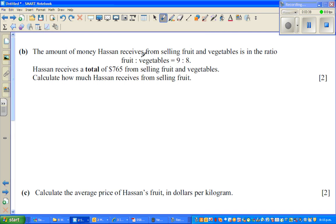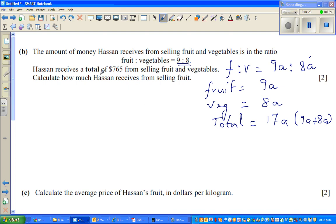So the amount of money Hassan receives from selling fruit and vegetables is in the ratio of 9 is to 8. So again, let me write F to V is 9A is to 8A. So that means if he in fruit, if he got 9A dollars, in vegetables he got 8A dollars. So total, he got how many dollars? I can say 9A plus 8A, which is 17A. Now why did I add? Because it says here, Hassan receives a total of 765 from selling fruits and vegetables.